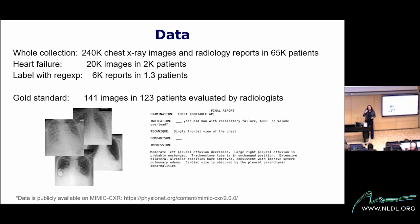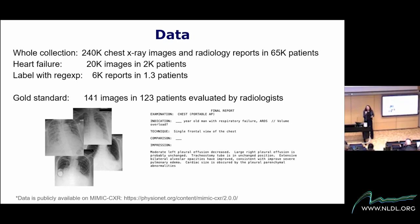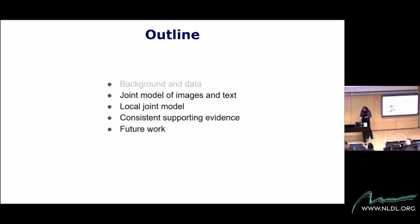The reasons we can only label 6,000 are twofold. Some images are described with reference to the previous image — a legitimate radiology report might say 'no change from previous image' or 'edema has worsened,' and our simple scripts can't handle that. Other times the case is complicated and the radiologist describes that complexity in ways our simple tools can't parse.